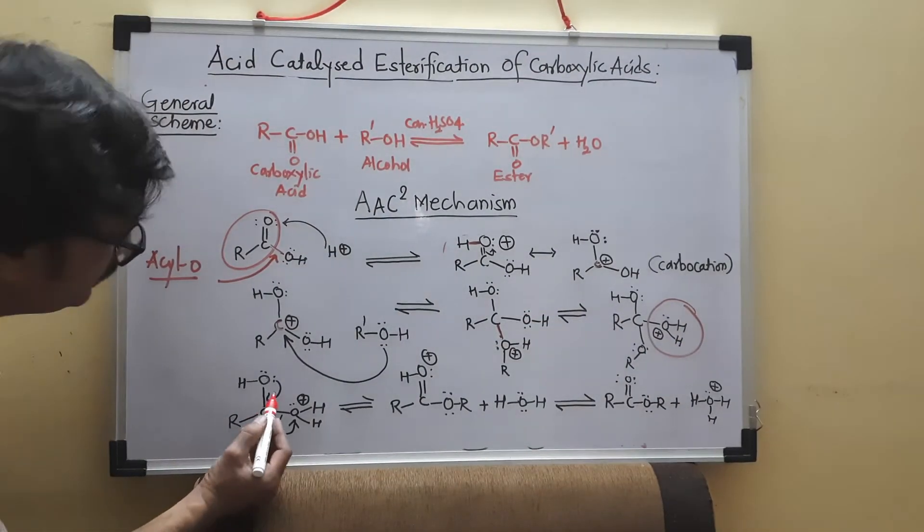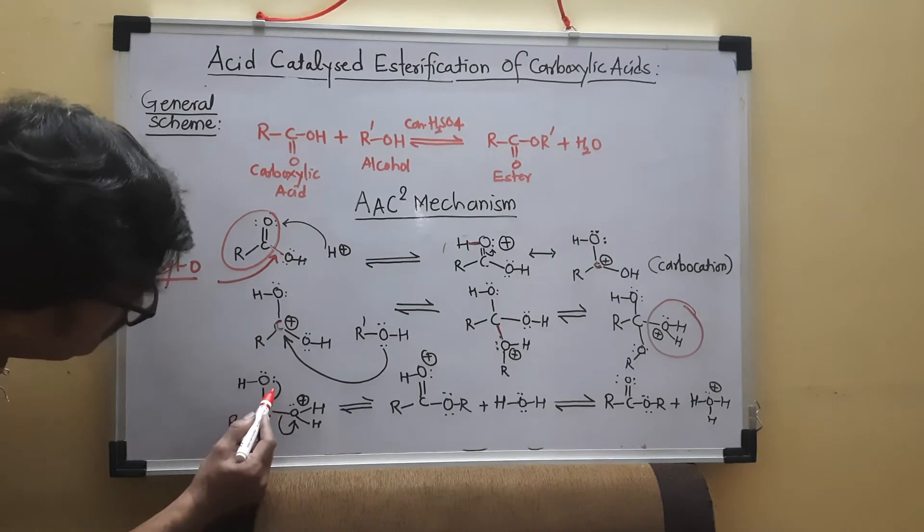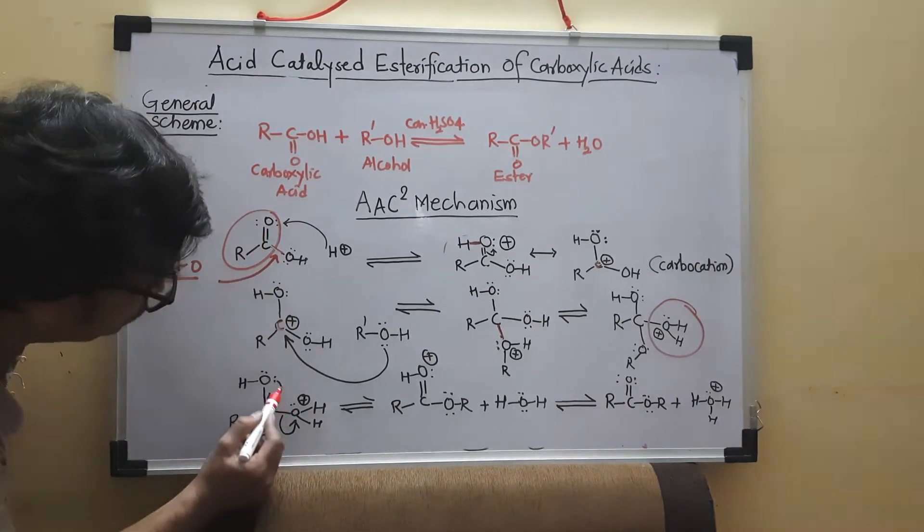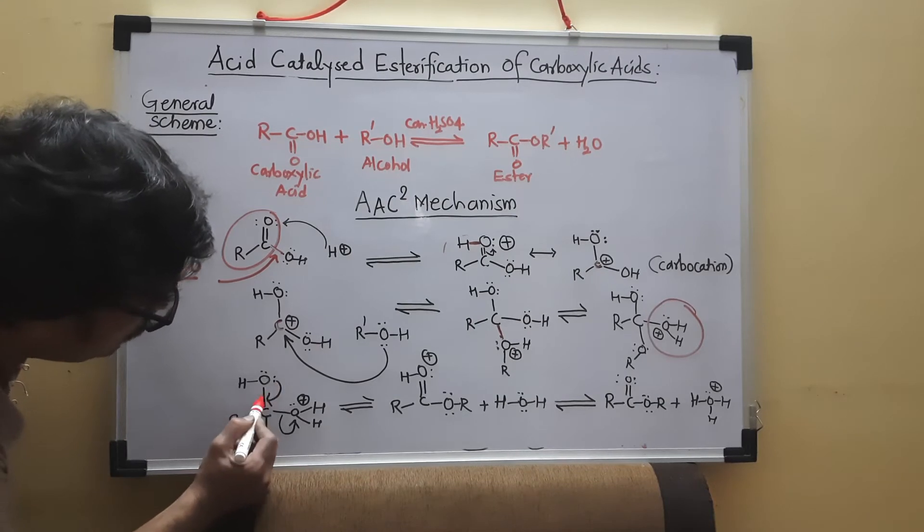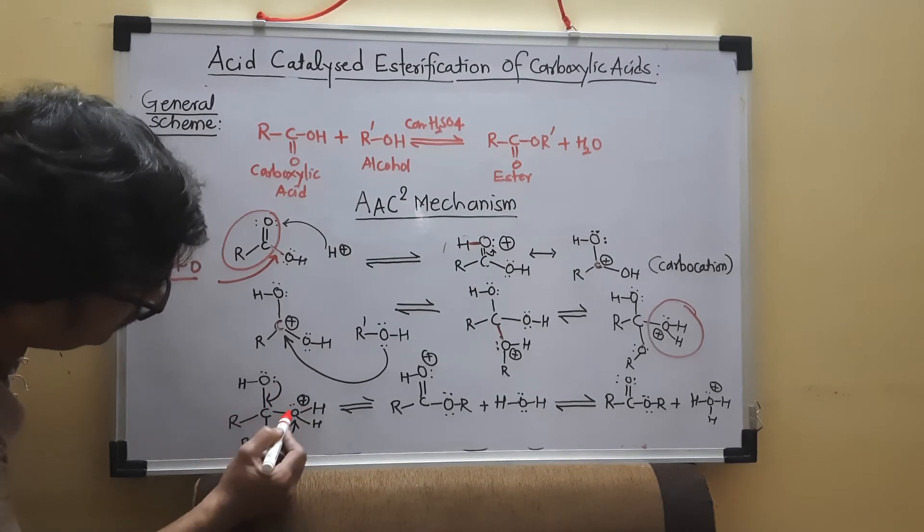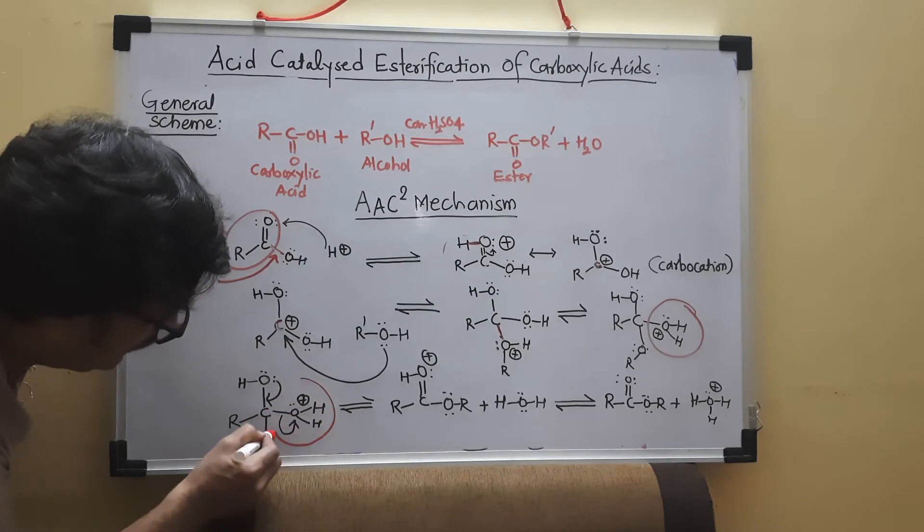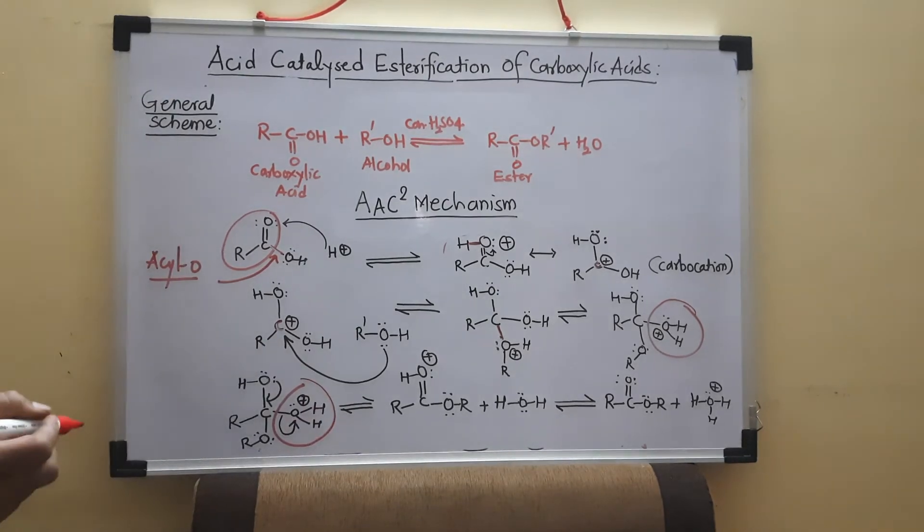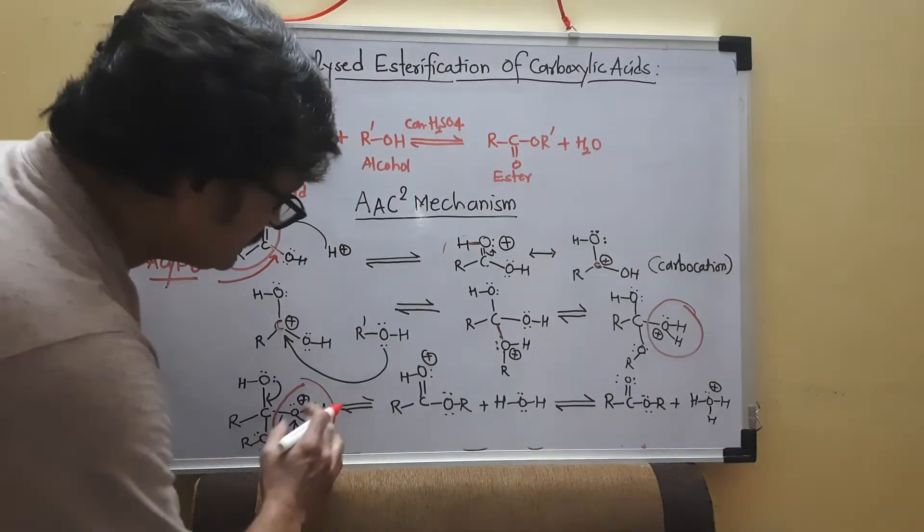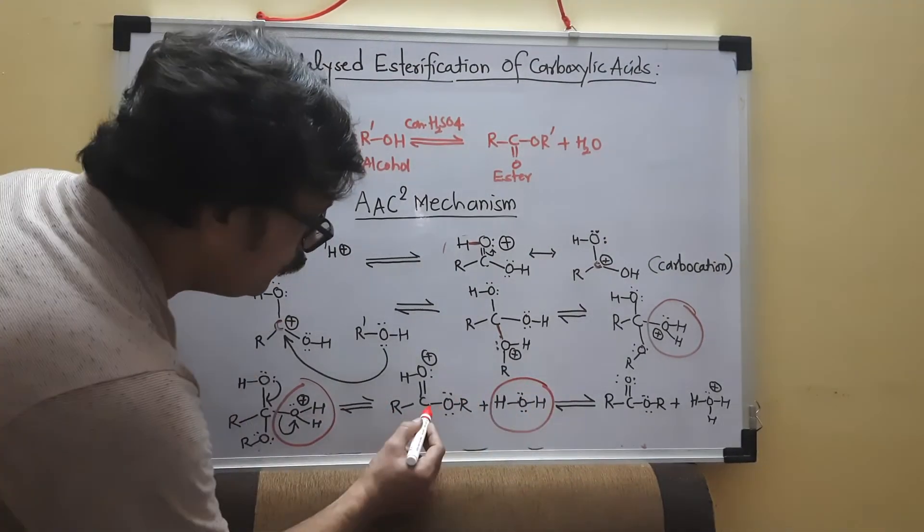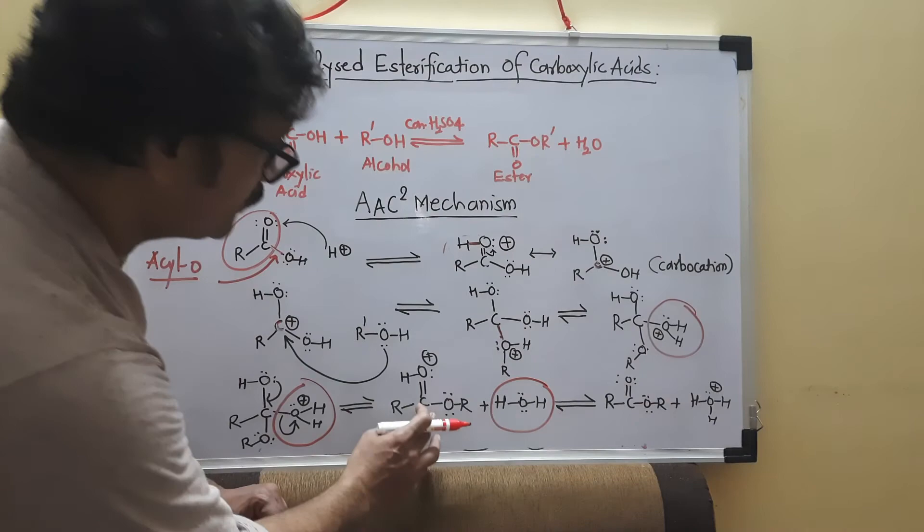Now, what happened in the third step, this double bond is regenerated, reformed by using this lone pair. And this will expel out this leaving group or this will remove this leaving group. Once that leaving group is removed here, we get this intermediate, this compound is formed, this is protonated.